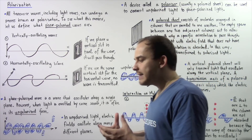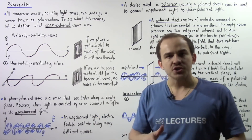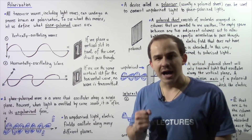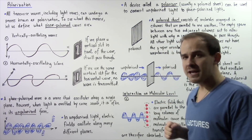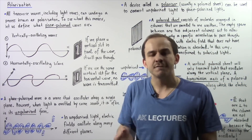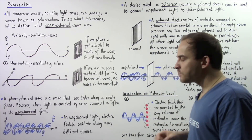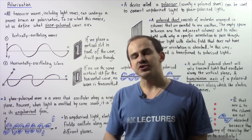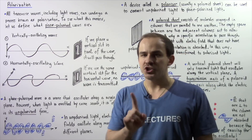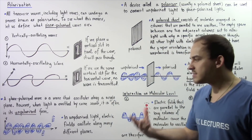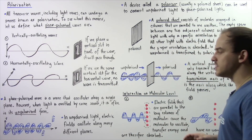Most waves that are produced — for example, light waves — come out from the source as unpolarized. Unpolarized light consists of electric fields that oscillate along many different planes. For simplification in this lecture, we will only consider the oscillating electric fields, though light also consists of oscillating magnetic fields as well.